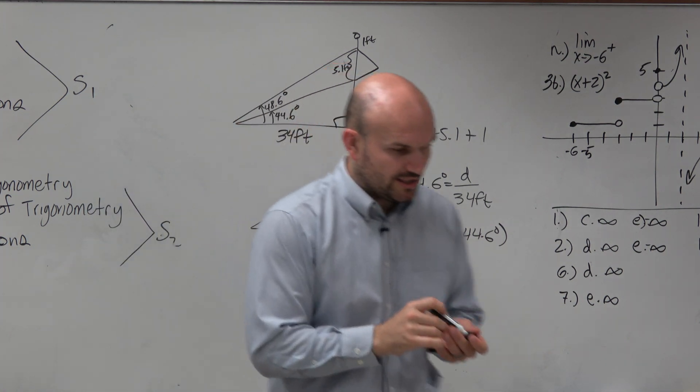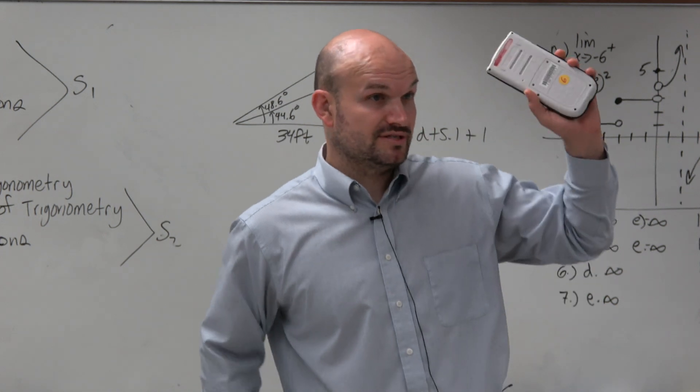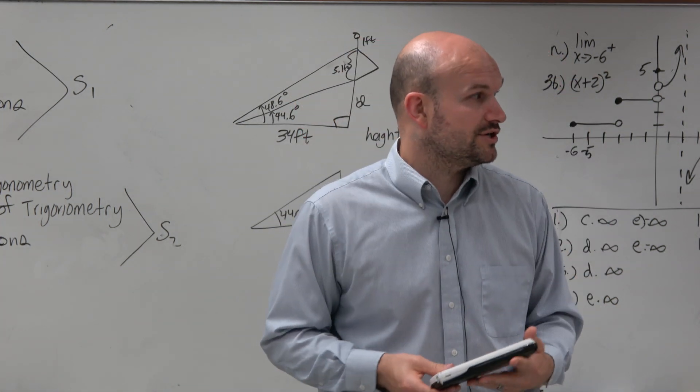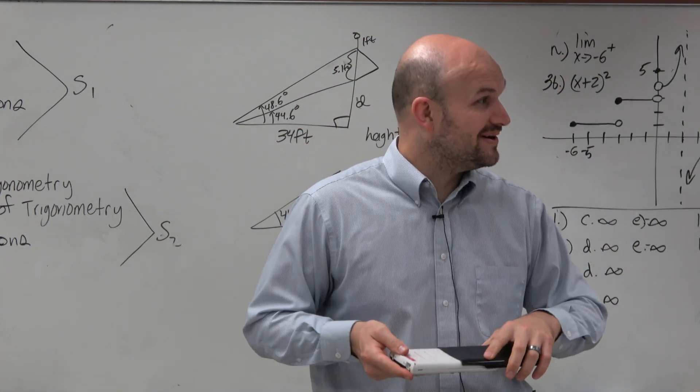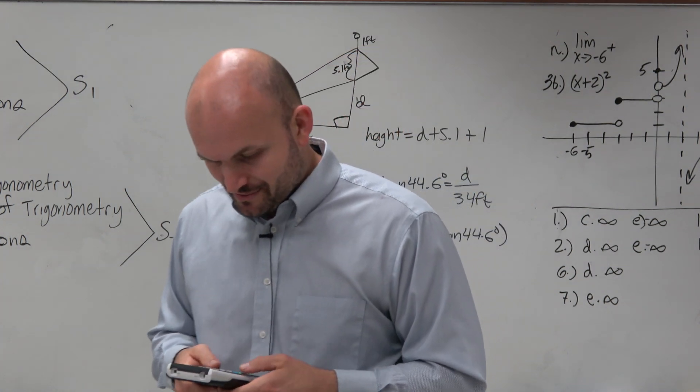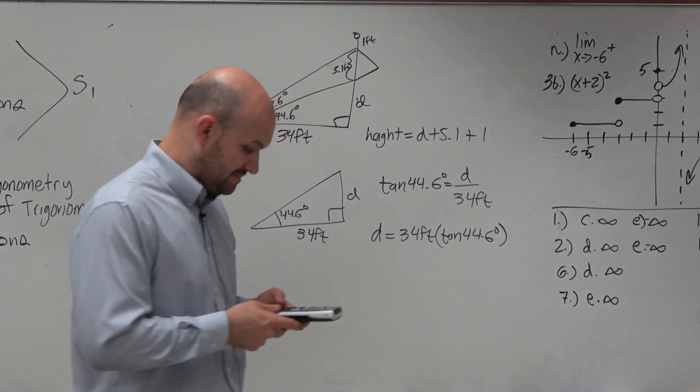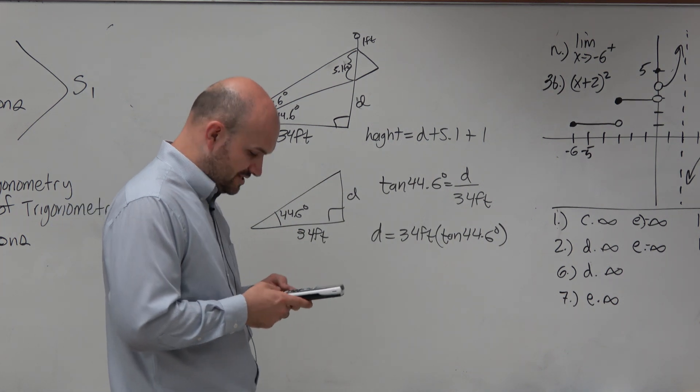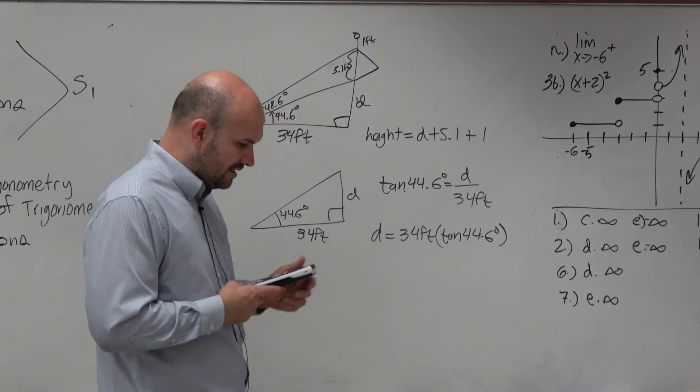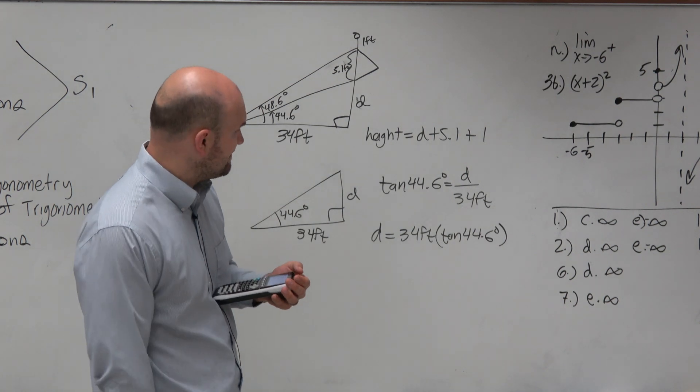So in my calculator, now again, I'm dealing with a degree, right? So I haven't used this calculator before. So what's the first thing I'm going to make sure I have? That it's in degree mode, right? Don't want it to be in radian mode. So I'm going to go ahead and make sure it's in degree mode. And then I'm just going to do 34 times the tangent of 44.6. And I get 33.52.